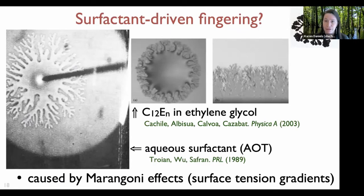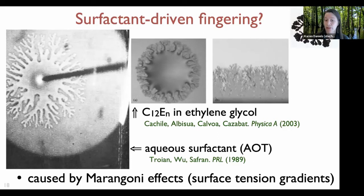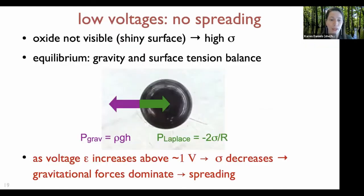The candidate I favor is surfactant-driven fingering — Marangoni effects. These fingers have been seen to arise from basically any gradient in surface tension. Pictures from this mechanism do look a lot like what we've been seeing. A Marangoni effect is simply a gradient in surface tension. To understand how we go unstable, the base state at low voltages was no spreading, a very shiny surface with no visible oxide, maintaining a spherical cap shape due to high surface tension balancing gravitational forces against Laplace pressure.